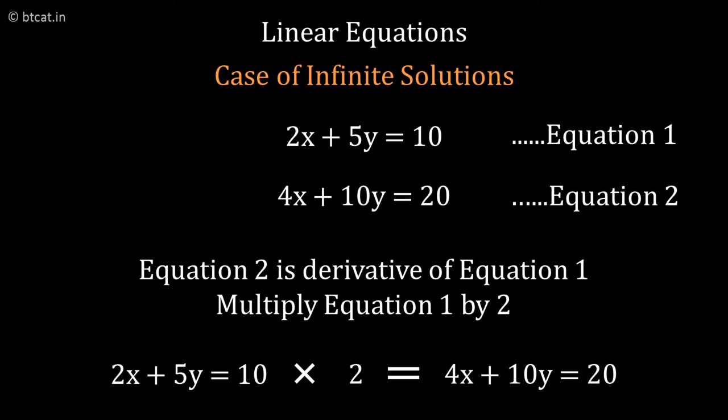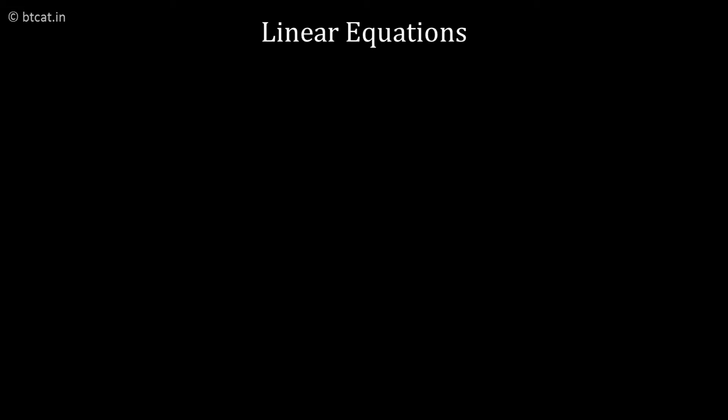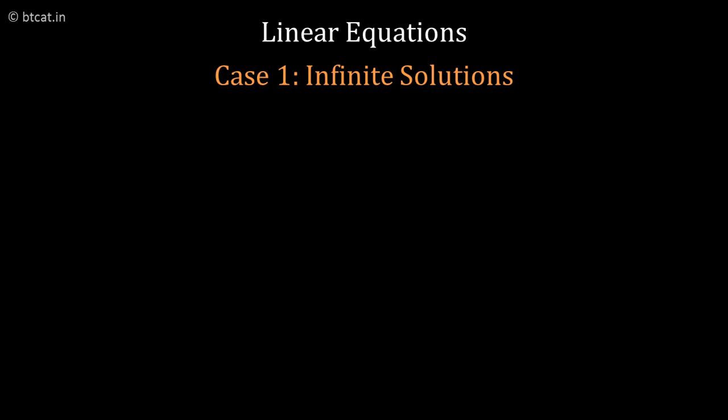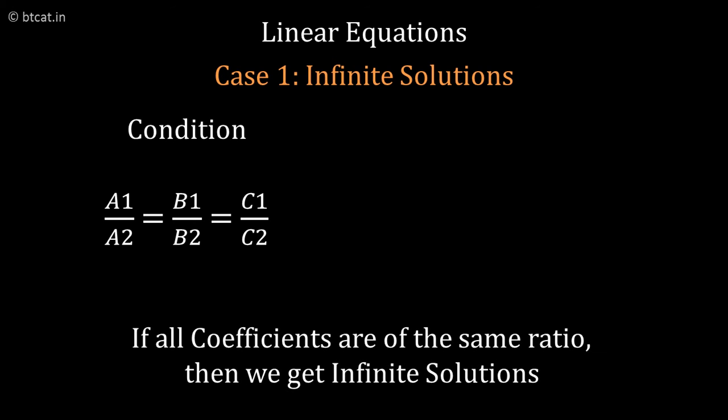If you want to make a theory out of it, if I denote the two linear equations by A1x plus B1y equals C1 and A2x plus B2y equals C2, you will get infinite solutions when the condition is A1 upon A2 equals B1 upon B2 equals C1 upon C2. If all the coefficients are of the same ratio, then we get infinite solutions.